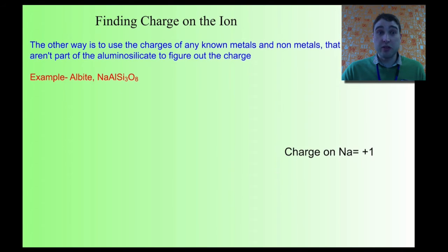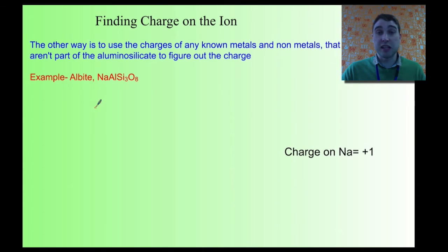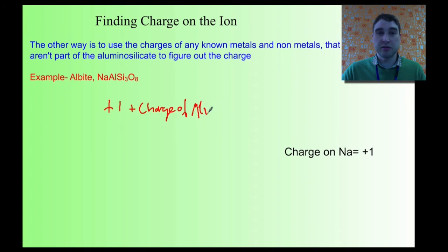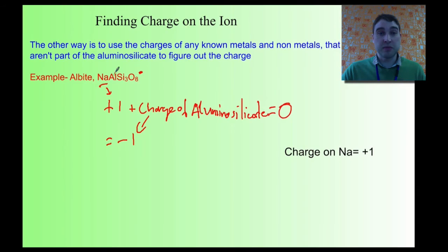There's another way of doing this, where you look at any metals at the front of the aluminosilicate, or any other ions at the end — for example, hydroxide ions with a minus one charge, or metals with a positive charge. In the case of albite, out the front there's a sodium ion. The whole point is the charge at the end has to be neutral. So the sodium ion has to balance out the charge of the entire aluminosilicate. The charge on sodium is plus one, so the charge on the aluminosilicate has to be minus one.